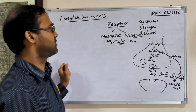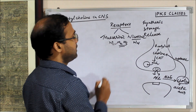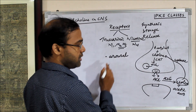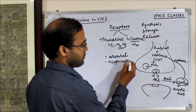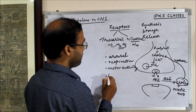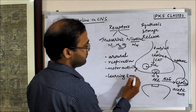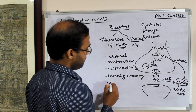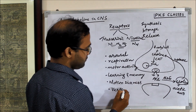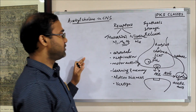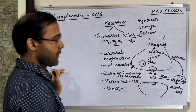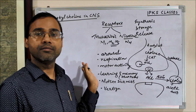The functions are mostly mediated by muscarinic receptors. The functions of acetylcholine in the CNS are mainly arousal, respiration, and motor activity. The main functions are learning and memory, particularly short-term memory. Another important function is motion sickness. So all these are functions of acetylcholine in the CNS.